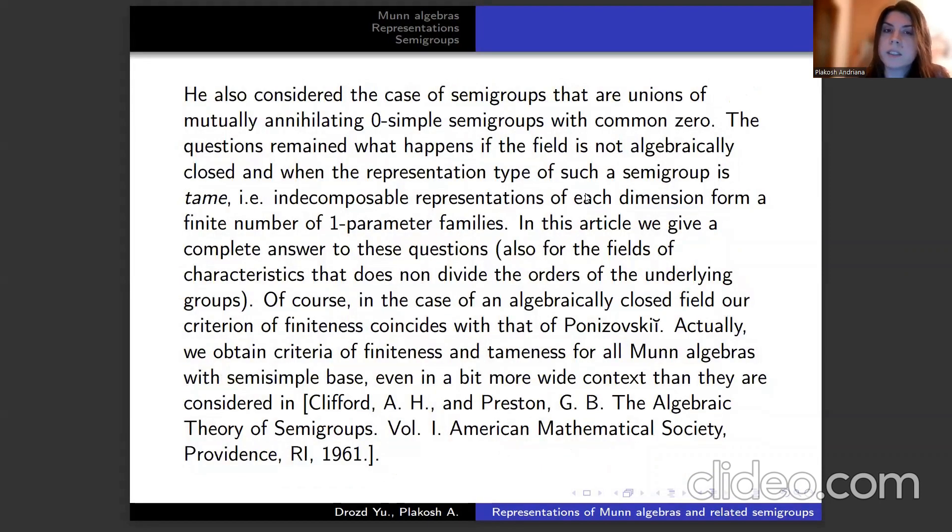He also considered the case of semigroups that are unions of mutually annihilating zero-simple semigroups with common zero. The questions remain: what happens if the field is not algebraically closed, and when the representation type of such a semigroup is tame, meaning the indecomposable representations of each dimension form a finite number of one-parameter families. In this article, we give a complete answer to this question.